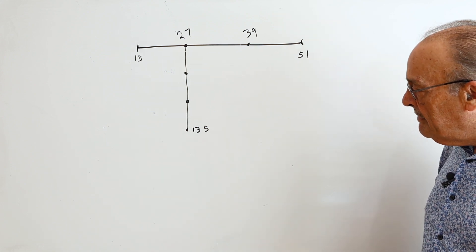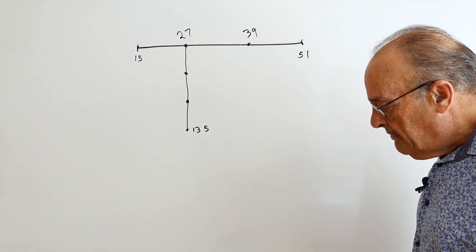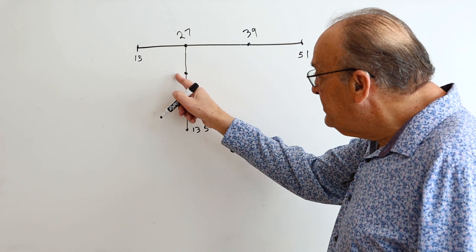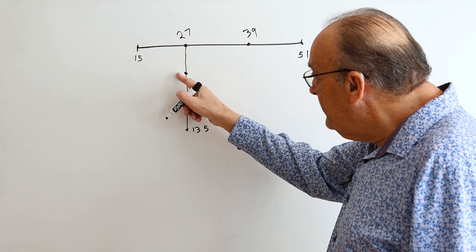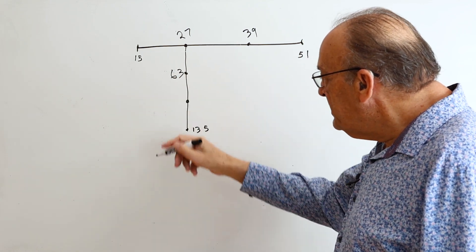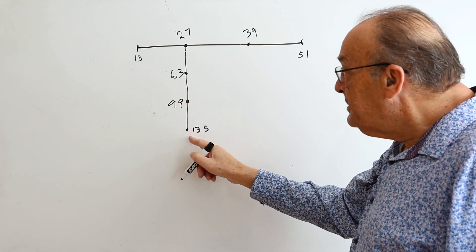Then you solve for these numbers the same way. What would that be? That would be 108. 108 divided by 3. That would be 36. So you add 36 to this and you get 63. Add 36 to this and you get 99. Add 36 to this and you get 135.